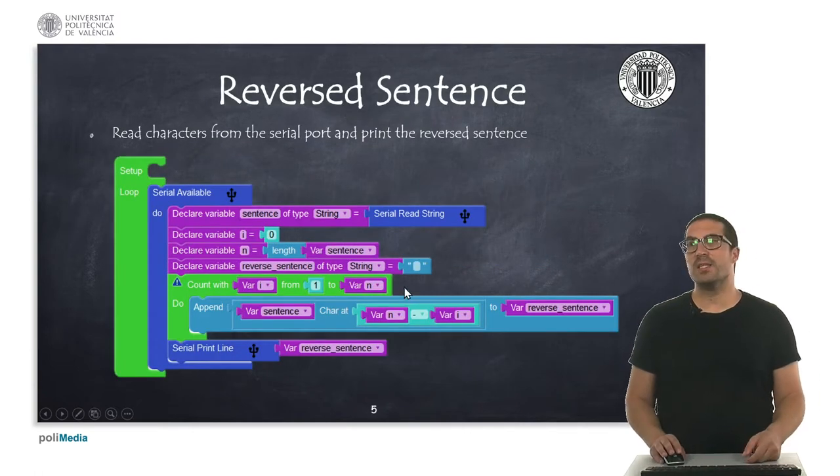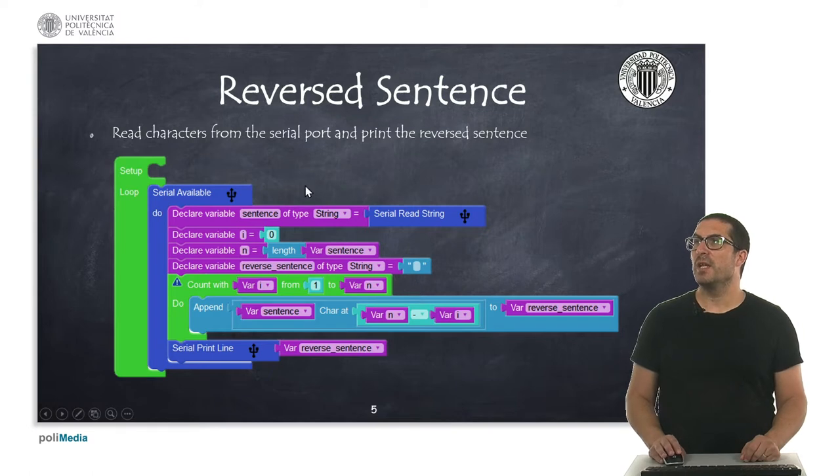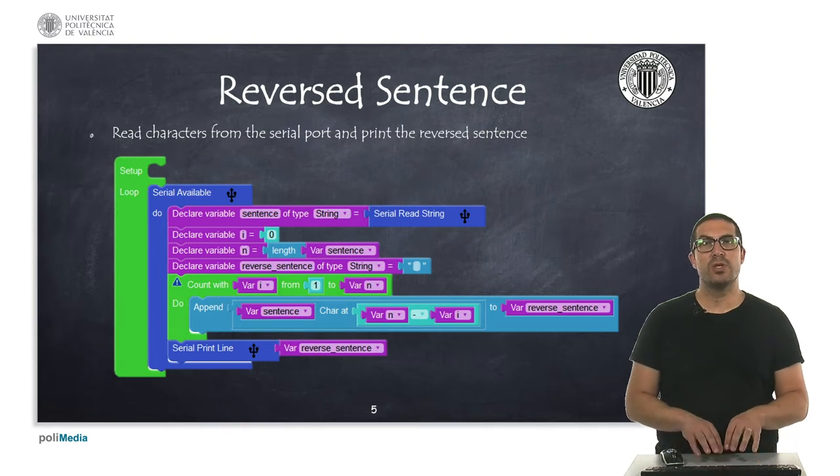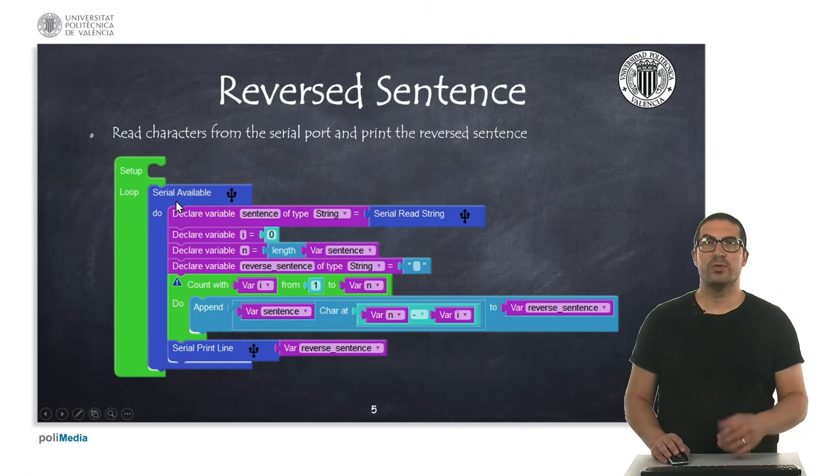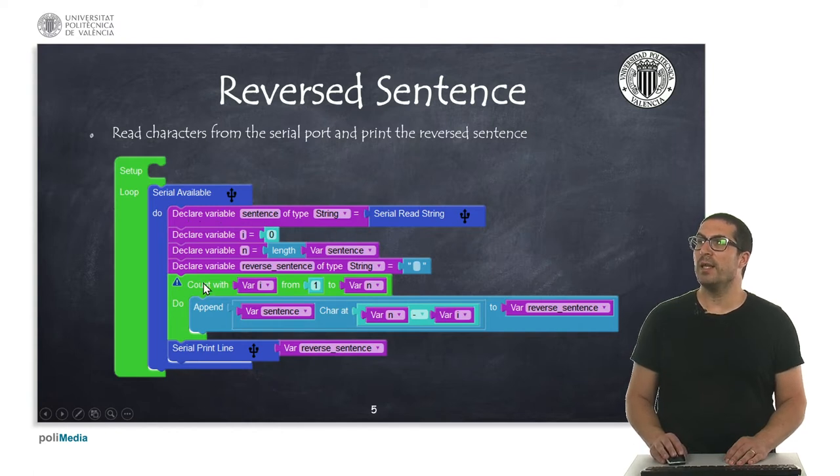Let's move to the exercises. The first exercise, the idea of this exercise is to reverse the characters of a sentence that we introduce using the serial port. As you can see here, we have the instruction for serial available so we are waiting to get some characters and then we read a string from the serial port and we store this string in a sentence variable here. And then here what we're doing is we're just simply doing a for loop. We count from one to n, n is the number of characters of the sentence.